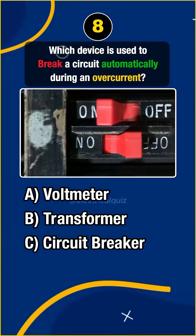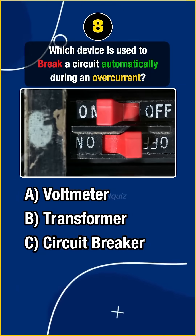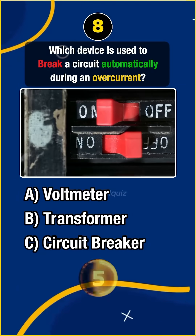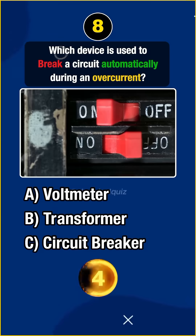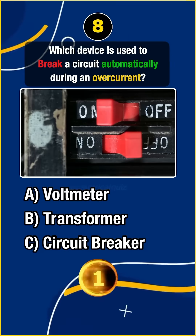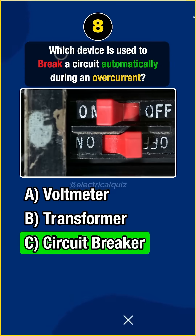Last question. Which device is used to break a circuit automatically during an overcurrent? Answer C: Circuit breaker.